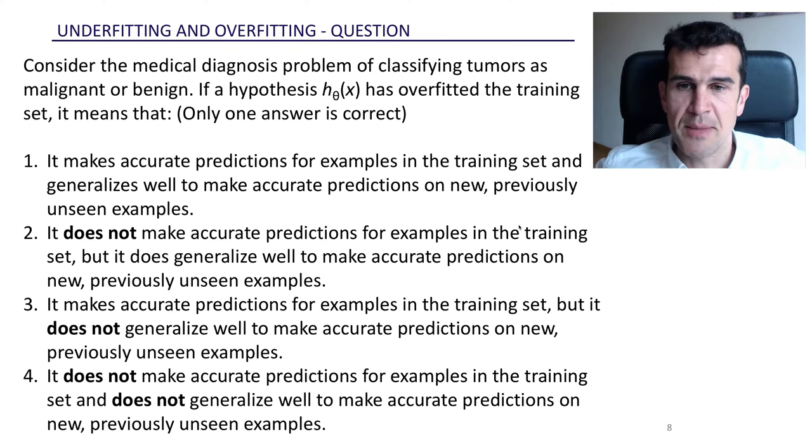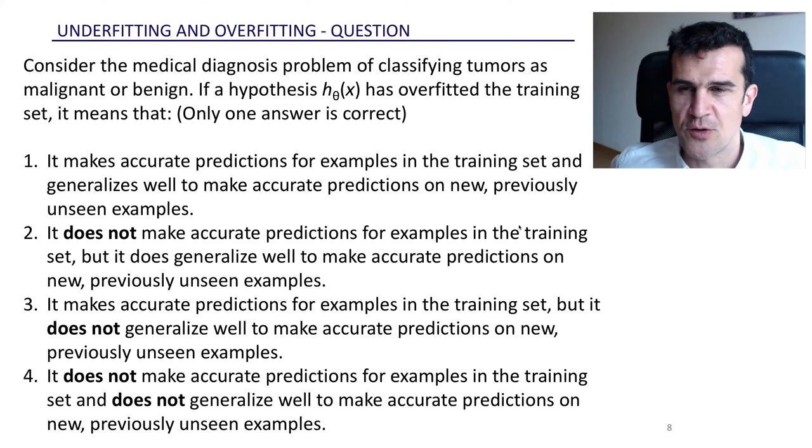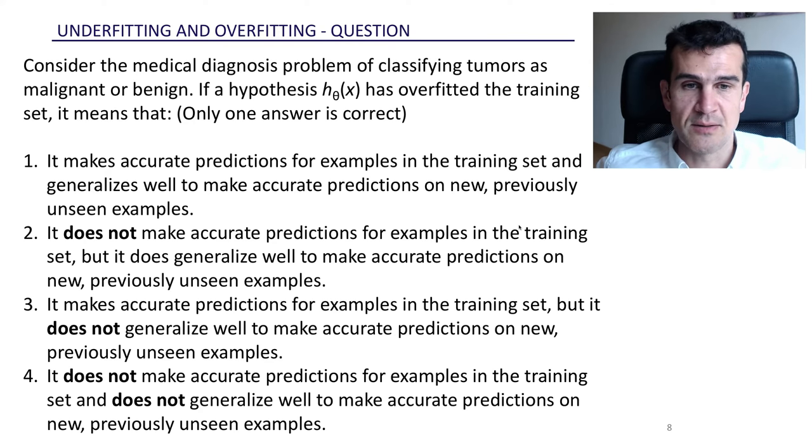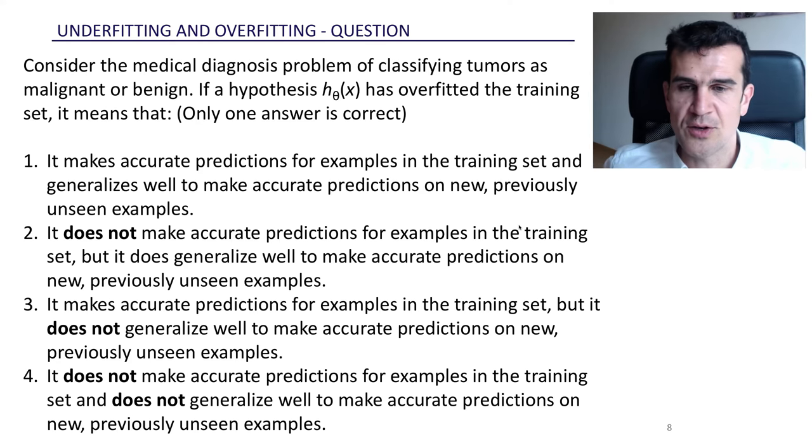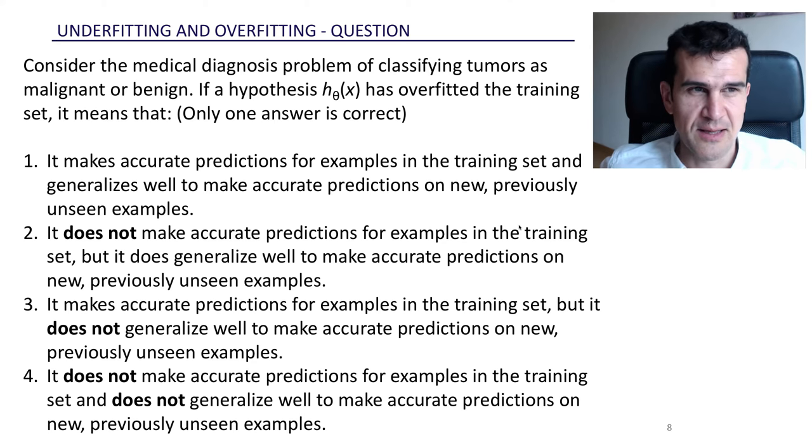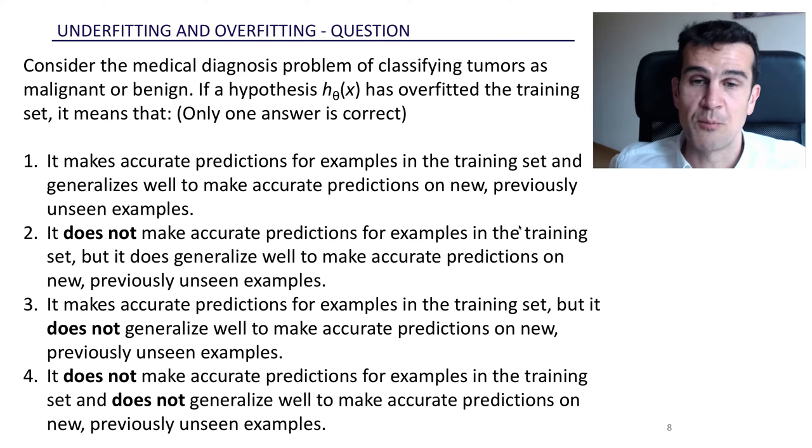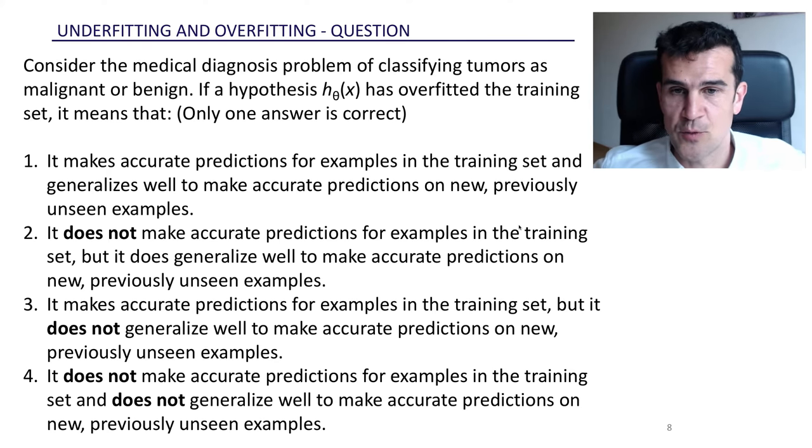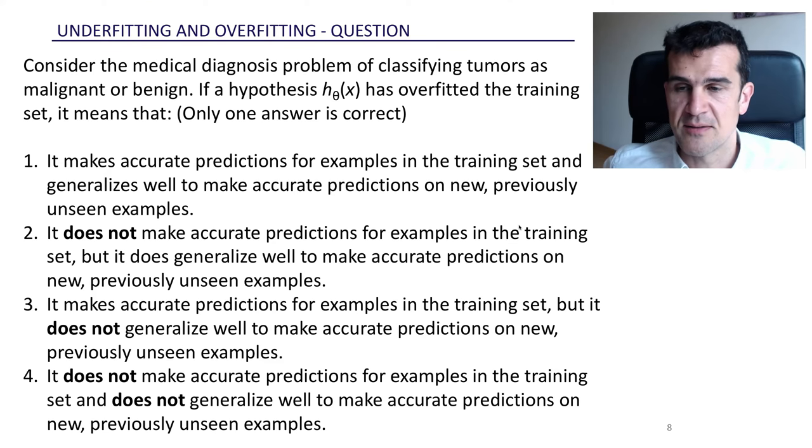Second, it does not make accurate predictions for examples in the training set. Well, that is not good so far. But it does generalize well to make accurate predictions on new, previously unseen examples. Well, that is very weird. How would you do it well on new data when you don't do it well even, not even on training data? That is really bizarre. If that happens to me, what I do is to look at the code assuming that I have a bug. I've made a mistake somewhere. So this is really weird, really bizarre, something to look at.